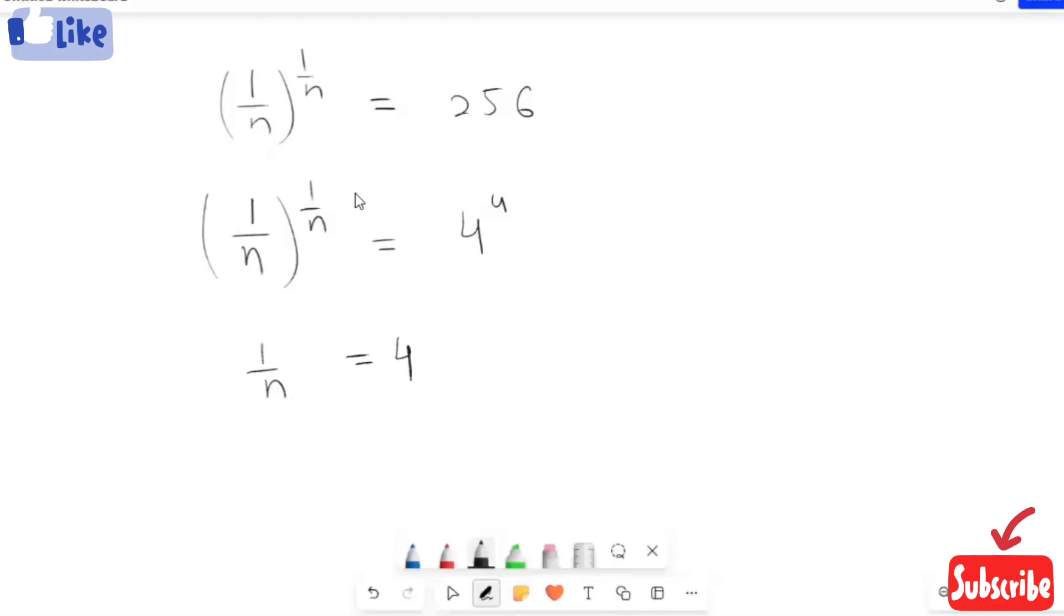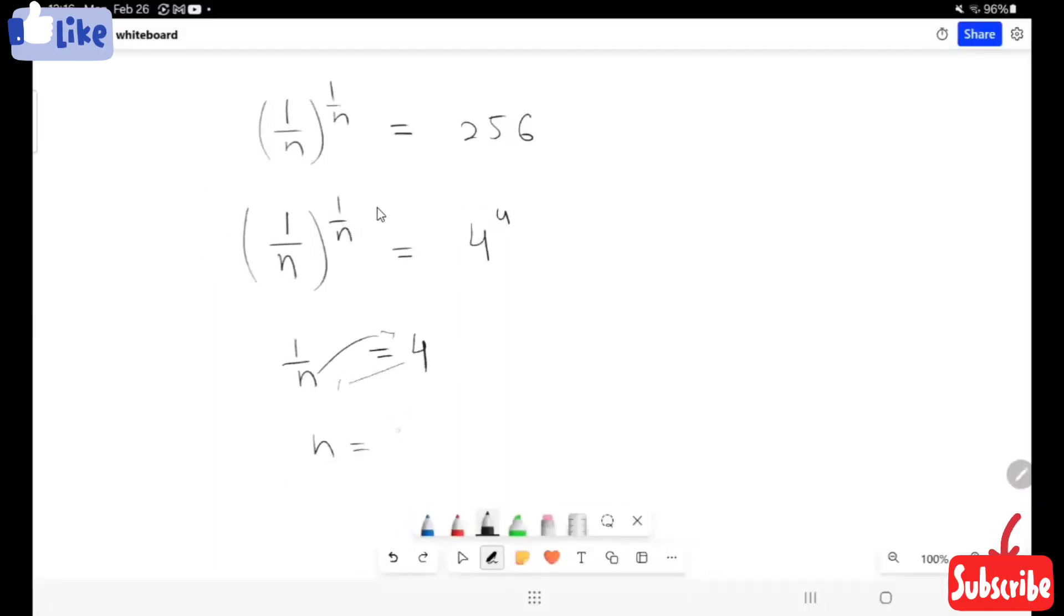From 1 over n equals 256 raised to power n, rearranging the equation, I got n is equal to 1 over 4. So this is our final answer.